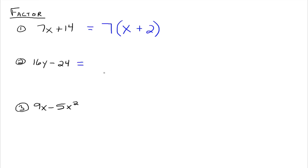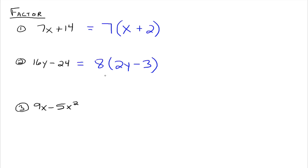16y minus 24. Looking at these two terms, we say what's common? An 8 — sure, 4 would work, but 4 is not the largest. We could use 8. 8 divides into 16 evenly, and 8 divides into 24 evenly. So we take an 8 out, and dividing 8 out of 16y leaves 2y. And 8 out of 24 leaves minus 3. So 8 times 2y minus 3 is how this one factors. You can check it by distributing the 8 through and you get 16y minus 24.